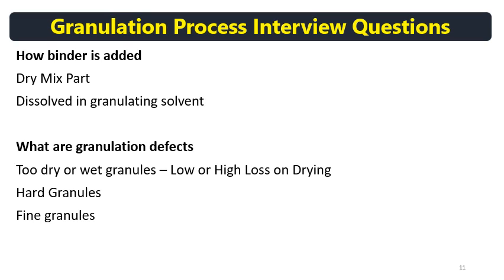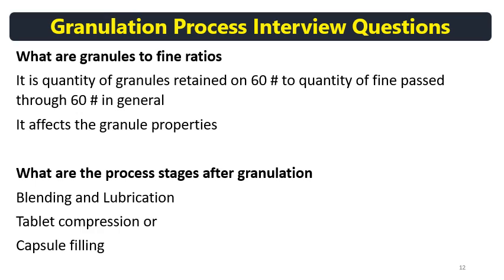The granules-to-fines ratio may be affected. Generally, 40% granules and 60% fines is a typical ratio. Material retained on 60 mesh is called granules, while material passing through 60 mesh is called fines. The granules-to-fines ratio affects granule properties like flow, density, and weight variation in capsule filling and tablet compression.